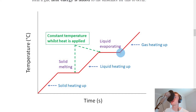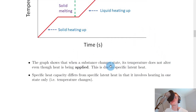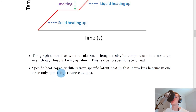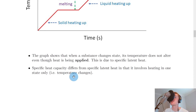If we have our gas at this point and we continue to apply heat, the temperature of the gas will just increase and we don't get anything else happening. The graph shows that when a substance changes state, its temperature does not alter even though heat is being applied — this is due to specific latent heat. Note that specific heat capacity differs from specific latent heat in that it involves heating in one state only, i.e. temperature changes. Specific heat capacity doesn't deal with changes in state, which is what specific latent heat does. The temperature change delta T appears in the equation for specific heat capacity, whereas delta T does not appear in any equations for specific latent heat.